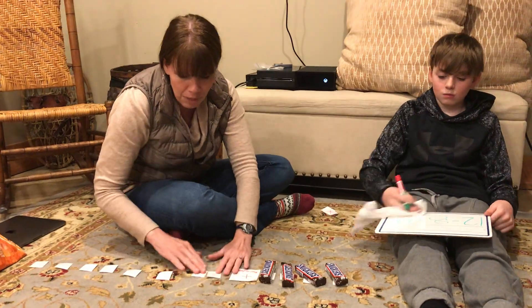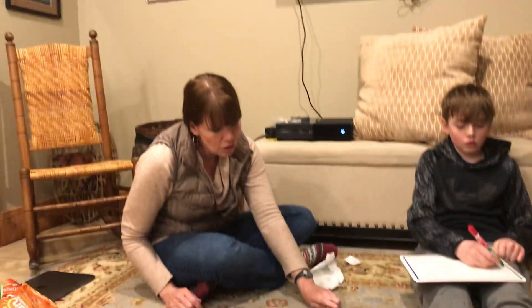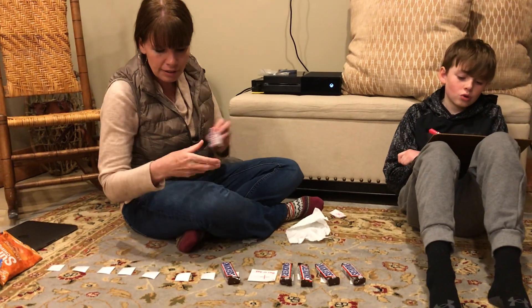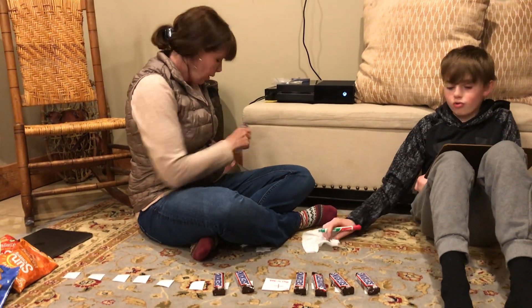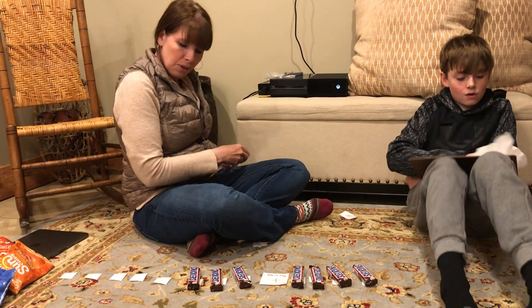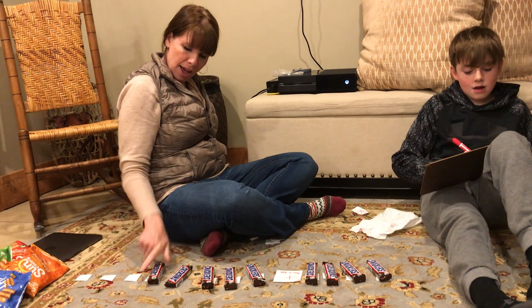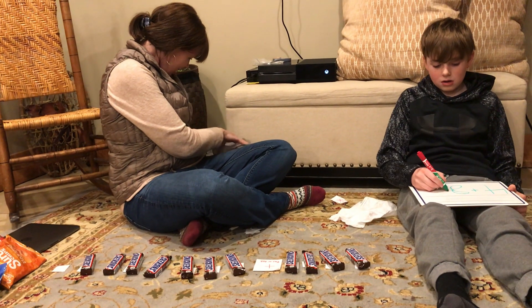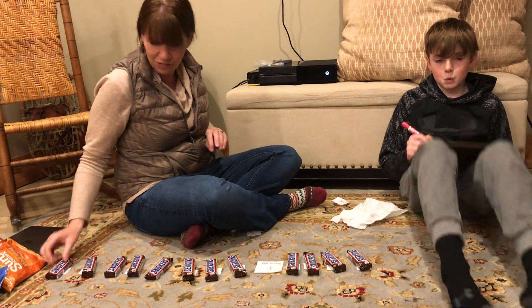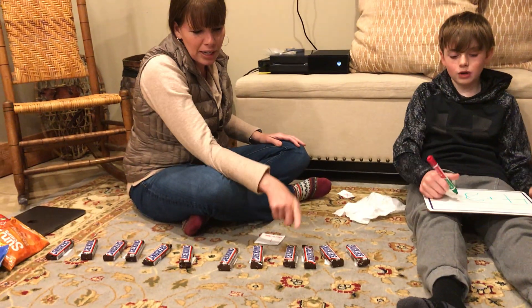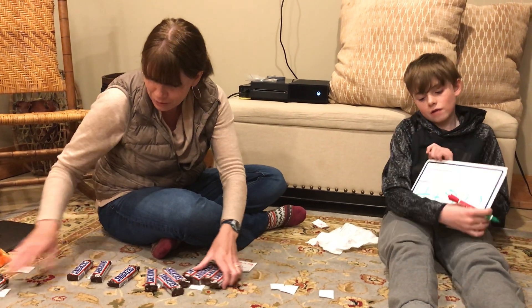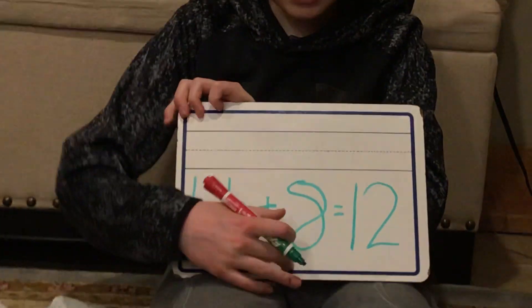Now we're going to add back what's missing. So we have one, two, three, four, plus one, two, three, four, five, six, seven, eight. Four plus eight, and we're going to put them all together. One, two, three, four, five, six, seven, eight, nine, ten, eleven, twelve. Great. And will you read that back please, Charlie? Four plus eight equals twelve. Awesome.